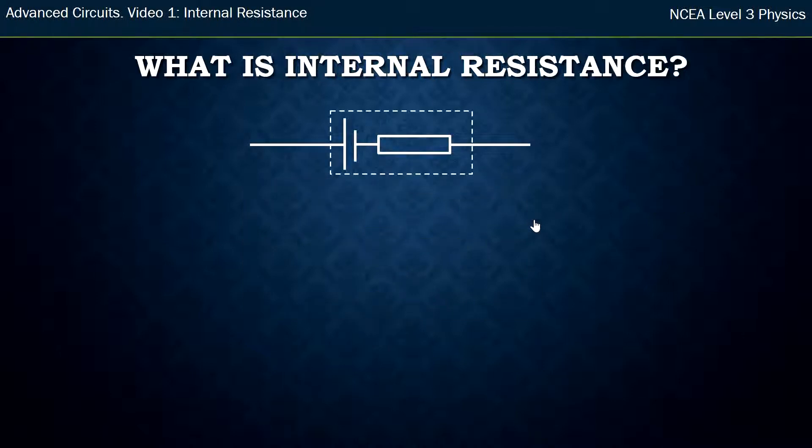Internal resistance is imperfections in the battery or the power pack, which cause it to lose some energy to heat. The way we draw that is we draw this dash line to represent the whole battery. Within that, it has a supply of power—those are the two dash lines—and then the resistor symbol to show that there is resistance within this battery.